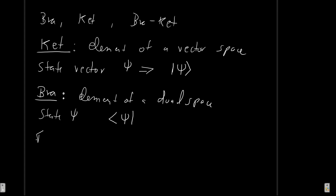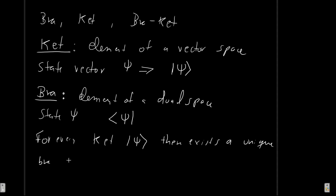It's important to note that for every ket psi, there exists a unique bra of psi. So if you have any ket, you know that there exists a unique bra. This also works the other way around — if you have any bra, you know that there's going to exist some ket vector.